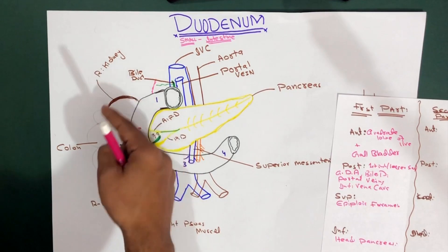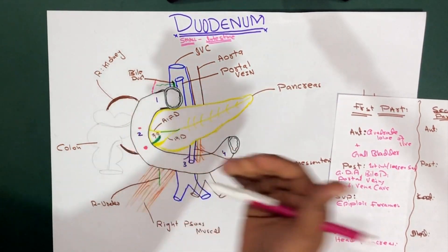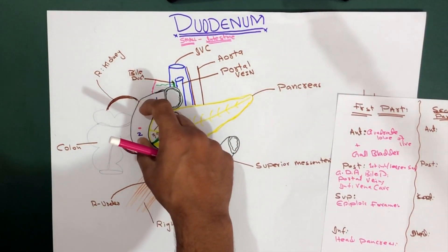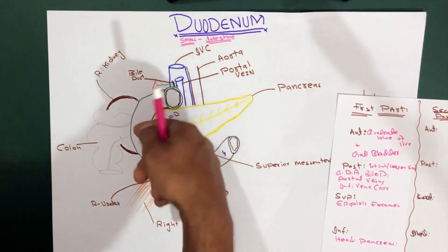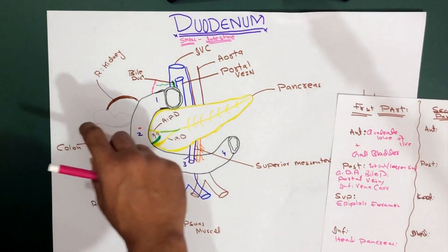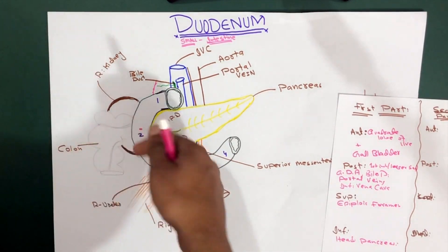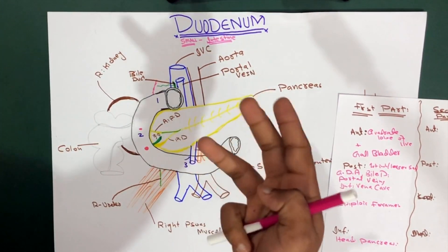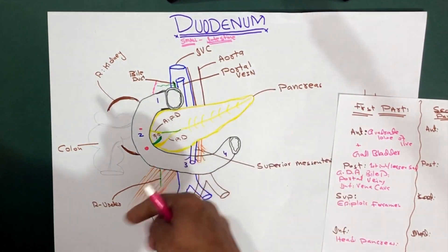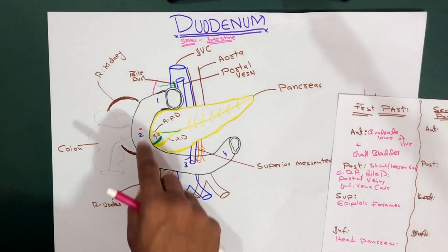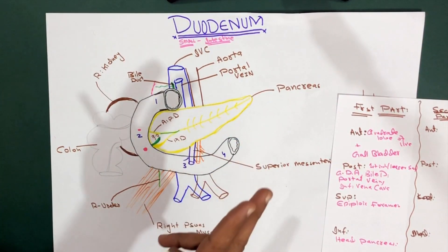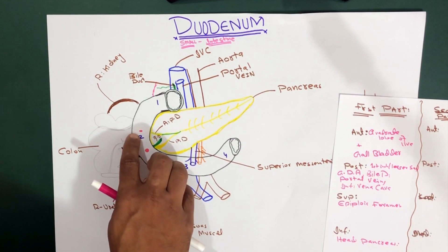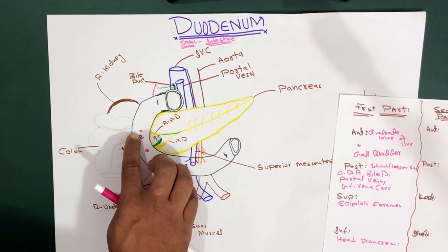The second part runs in front of the hilum of the kidney. You can see this kidney here - the hilum is an opening where structures like veins and arteries go into the kidney and come out. The hilum is posterior to this structure. Going posteriorly, the second part is located at the level of the second and third lumbar vertebrae. On the second part, we have two papillae: the major duodenal papilla and the minor duodenal papilla.